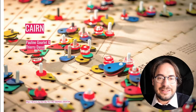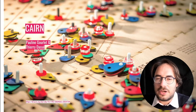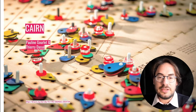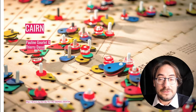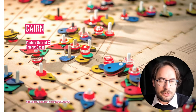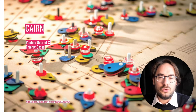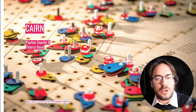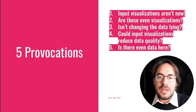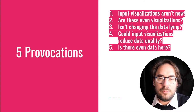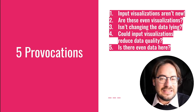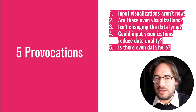Pauline Gourlet and Thierry Dassé's Cairn represent an even more elaborate version of this approach, using a tangible tabletop to enable data collection and sharing in a community makerspace. Cairn used a much more complex visual encoding schema, with composable physical tokens that let makers record both quantitative and qualitative information about their projects. This example, along with others noted in the paper, hints at the diversity of input visualization, as well as the general fuzziness about what can qualify as one.